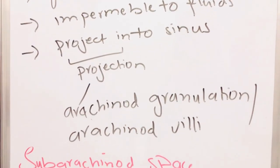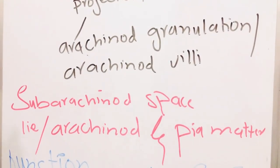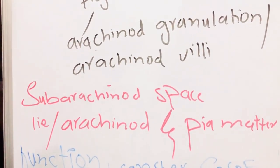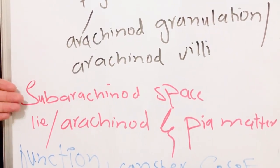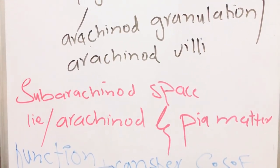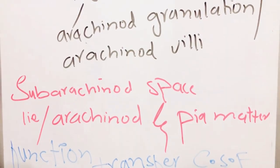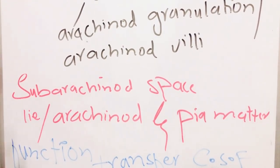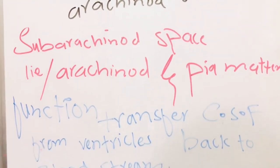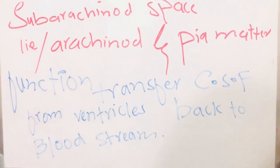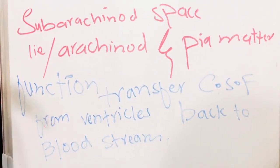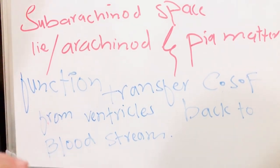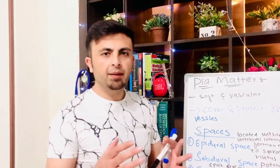Also known as arachnoid villi. The space between the arachnoid mater and the pia mater is called the subarachnoid space. It is a very important space because all the blood vessels and cranial nerves pass through it. The function of the arachnoid mater is the transfer of cerebrospinal fluid from the ventricles back to the bloodstream.